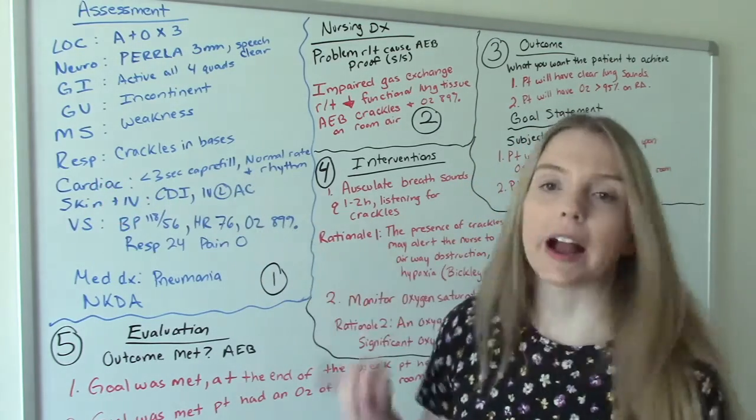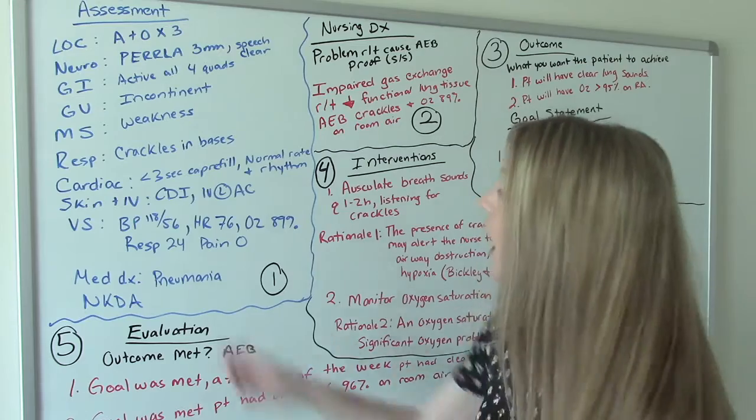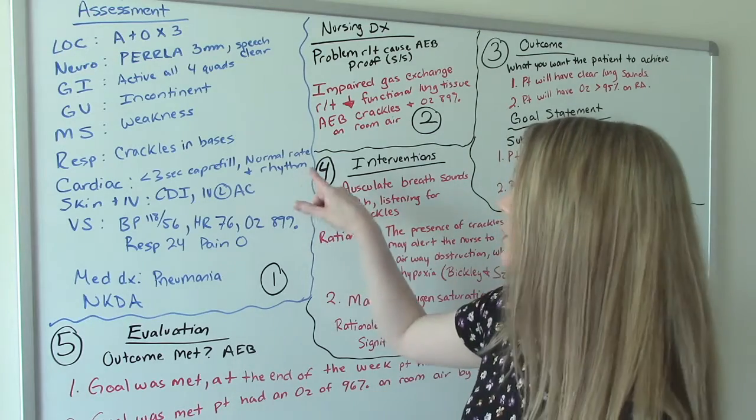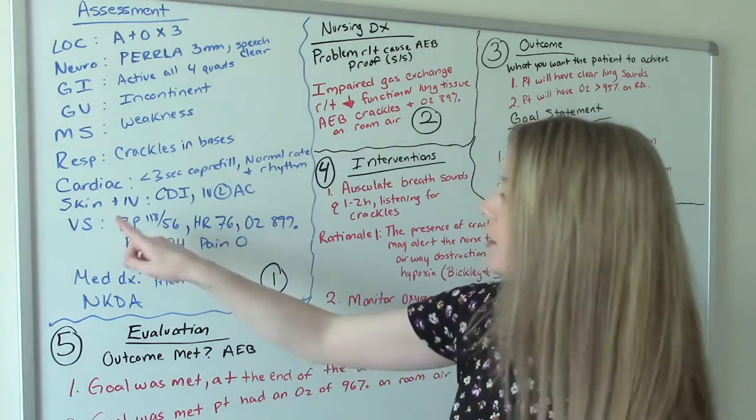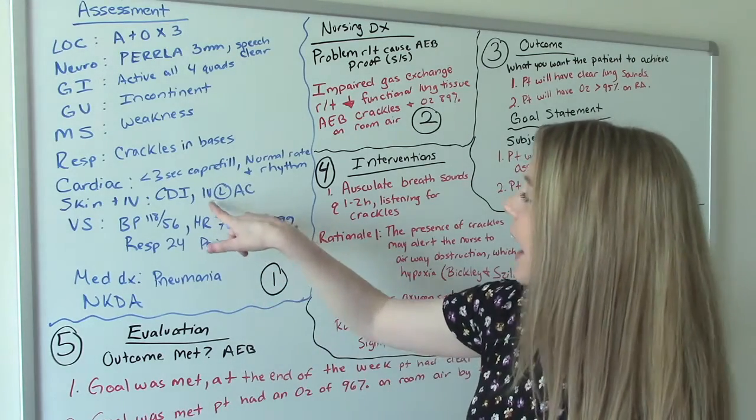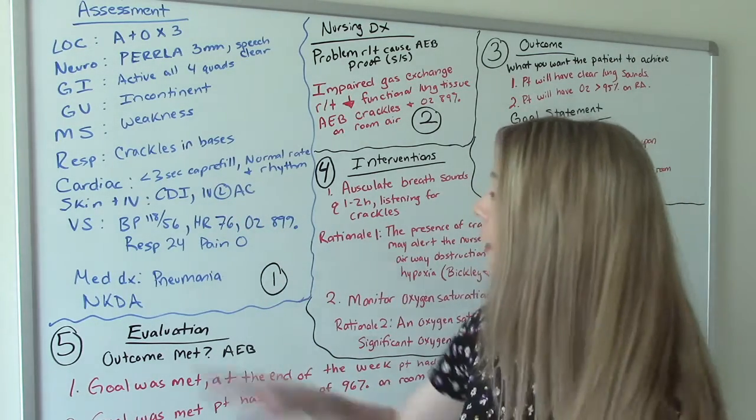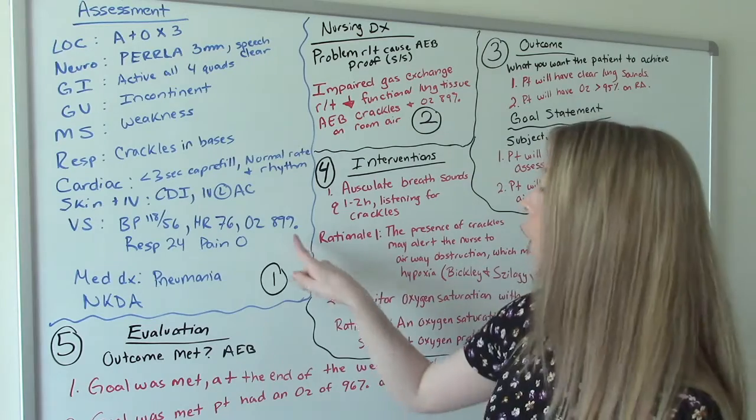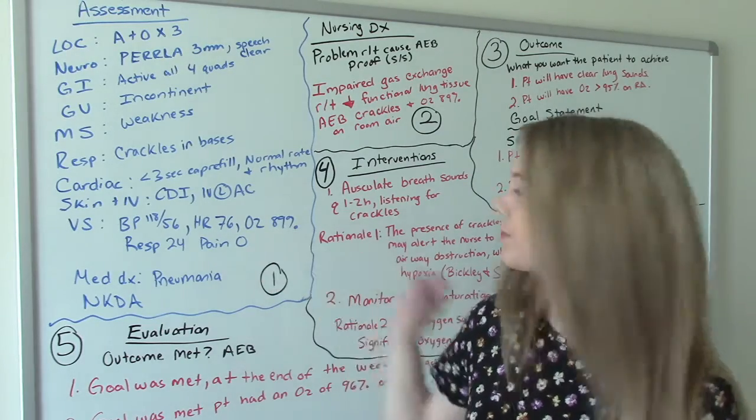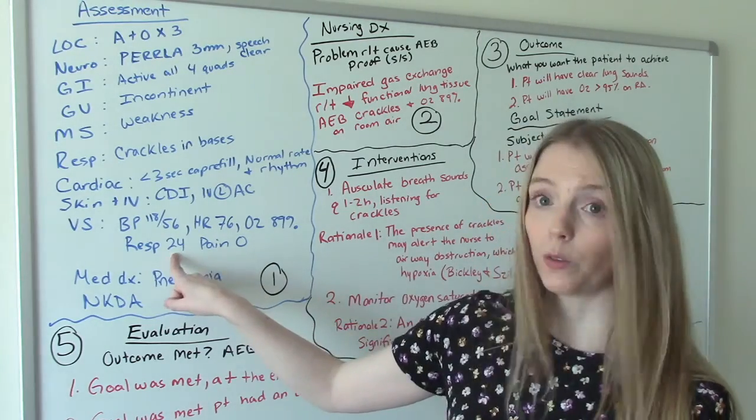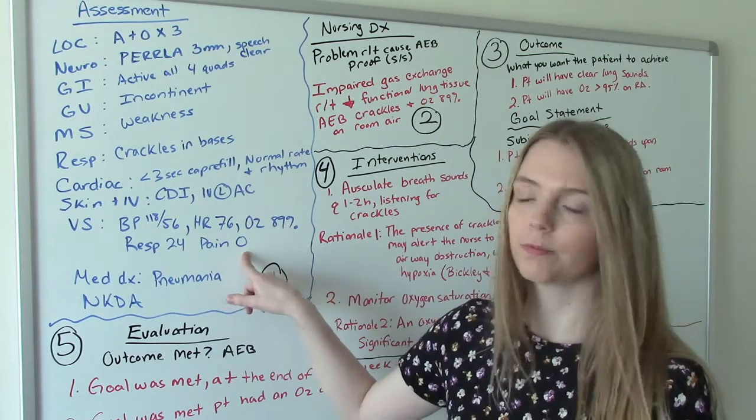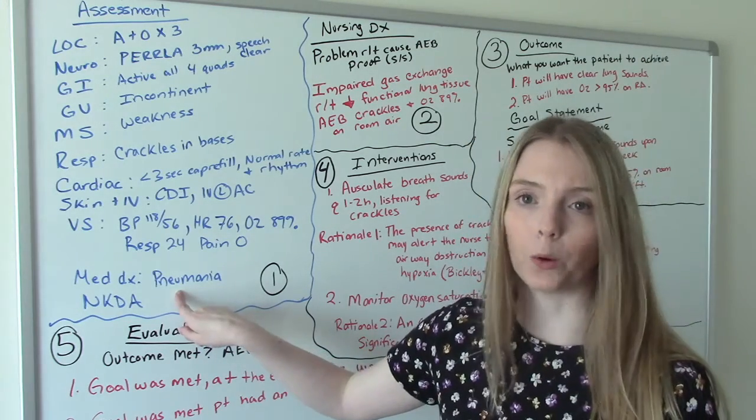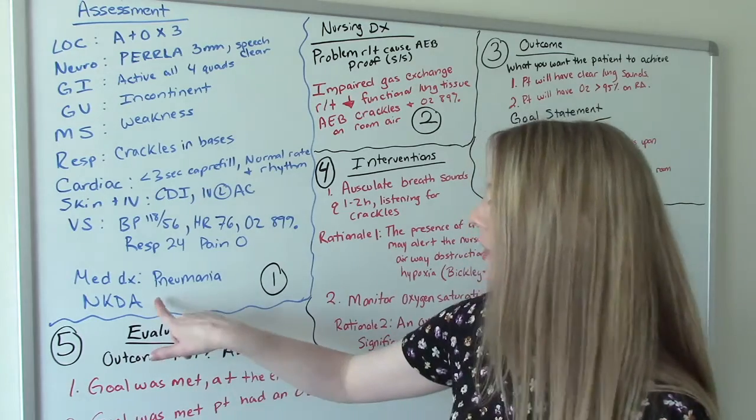Respiratory, we heard crackles in the bases of their lungs. Cardiac, so they had less than three second capillary refill time and their heart was a normal rate and rhythm. Their skin was clean, dry and intact and they had an IV in their left antecubital. Their vitals: blood pressure 118 over 56, heart rate 76, O2 is 89% on room air, respirations of 24 and then reported a pain of zero. And then the other information we got from the simulation is that they were diagnosed with pneumonia, so this is their medical diagnosis, and that they don't have any allergies.